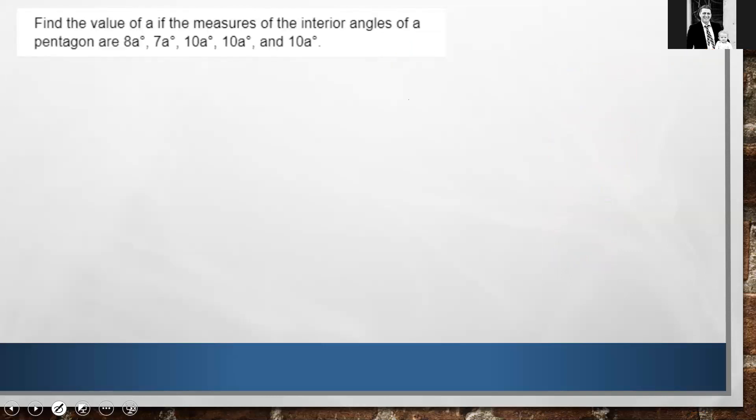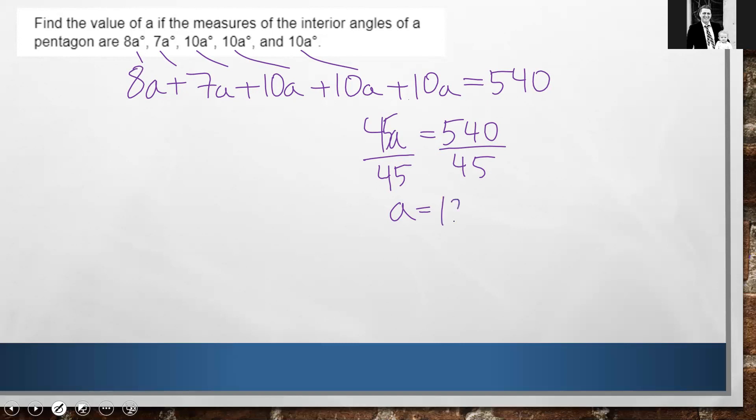Now we want to find the value of A if the measure of the interior angles of the pentagon. Now we already said that a pentagon adds up to 540 degrees. So I know that 8A plus 7A plus 10A plus 10A plus 10A, so I've just taken all of my angle measures and copied them down. So I have 5 angles here that all add up to 540 degrees. Now let's add all this up. What's 8 plus 7 plus 10 plus 10 plus 10? That's 45A. 45A equals 540. Let's divide each side by 45. That's going to give me 12 for my A value.